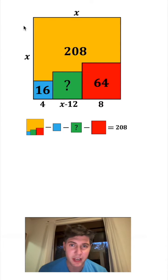So the area of the larger square is x times x, which is x squared. The area of the blue square was given as 16. This green one, this base is x minus 12, and the height is x minus 12, so it's gonna be x minus 12 squared for the area, and the red one's gonna be 64. All of this is still equal to 208.